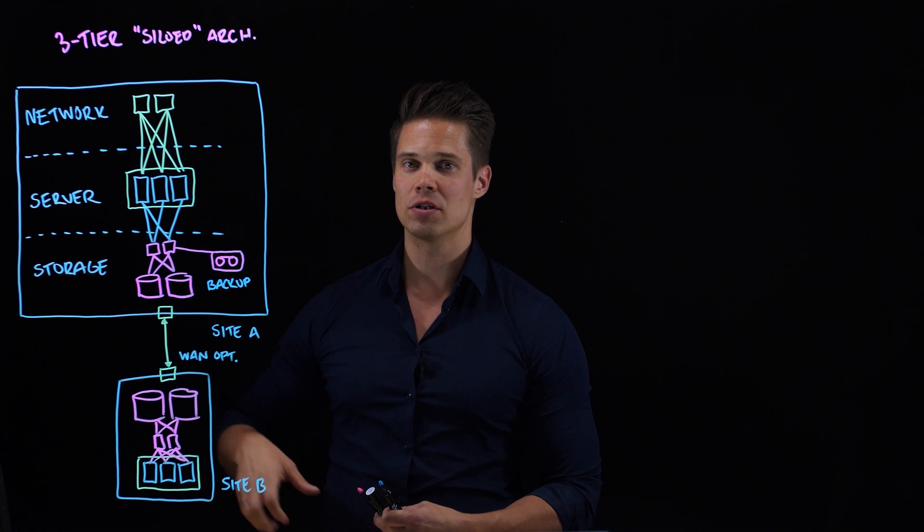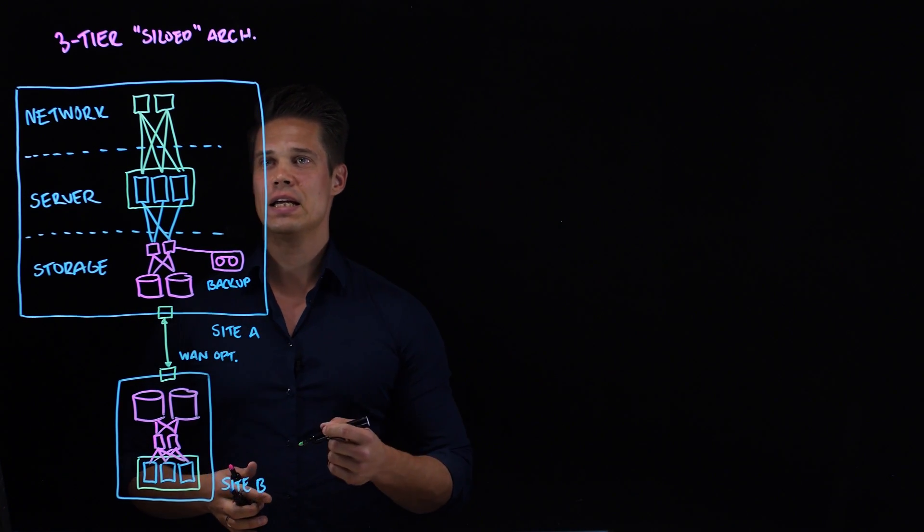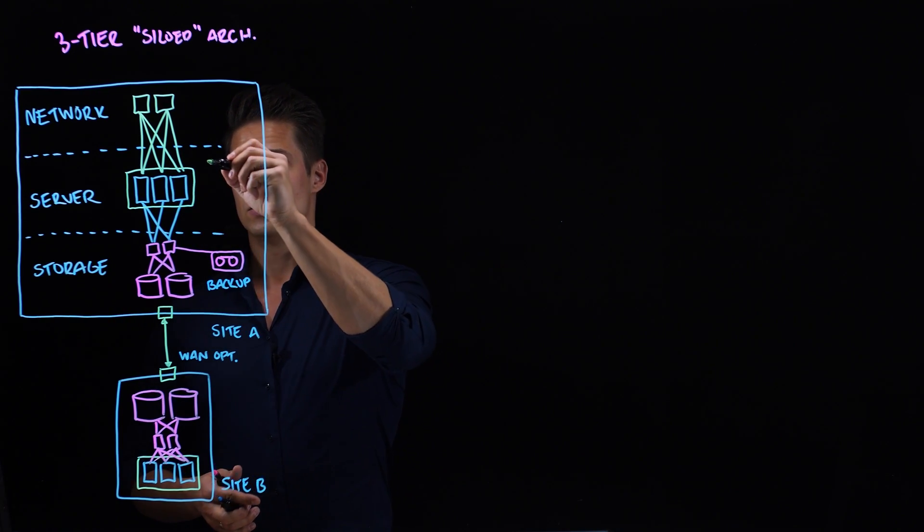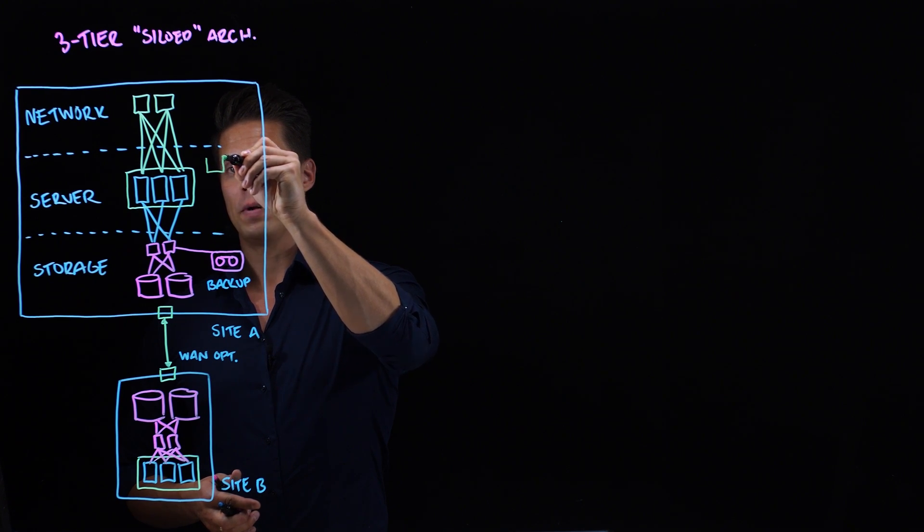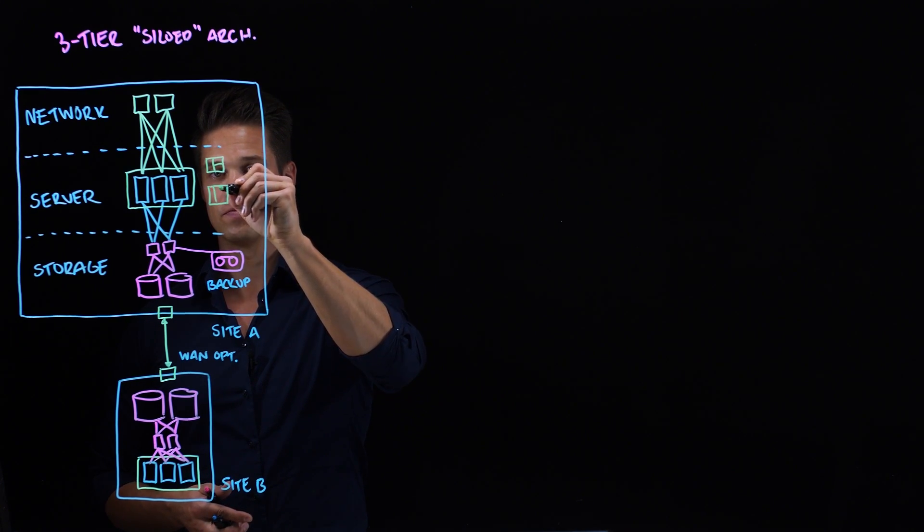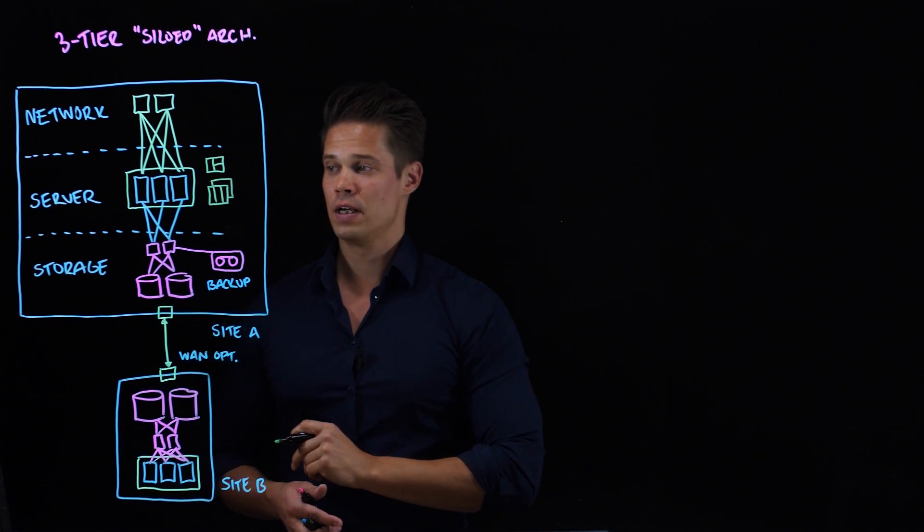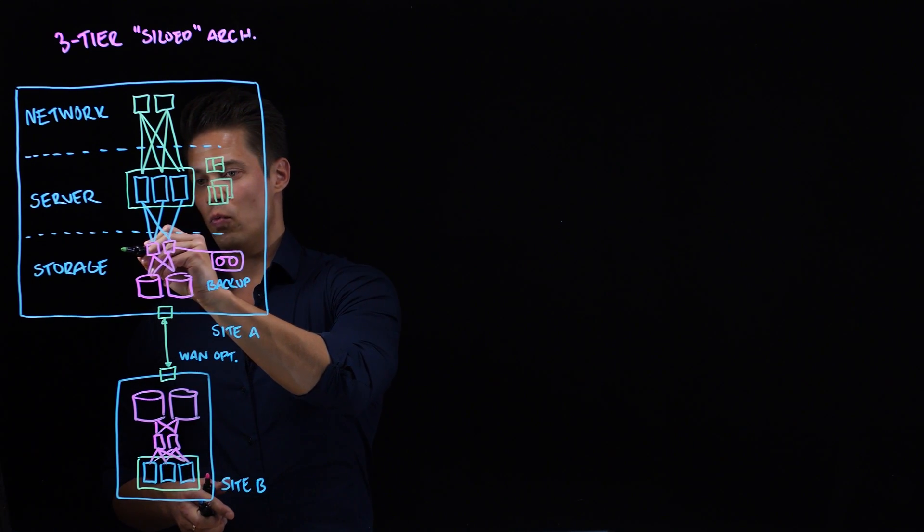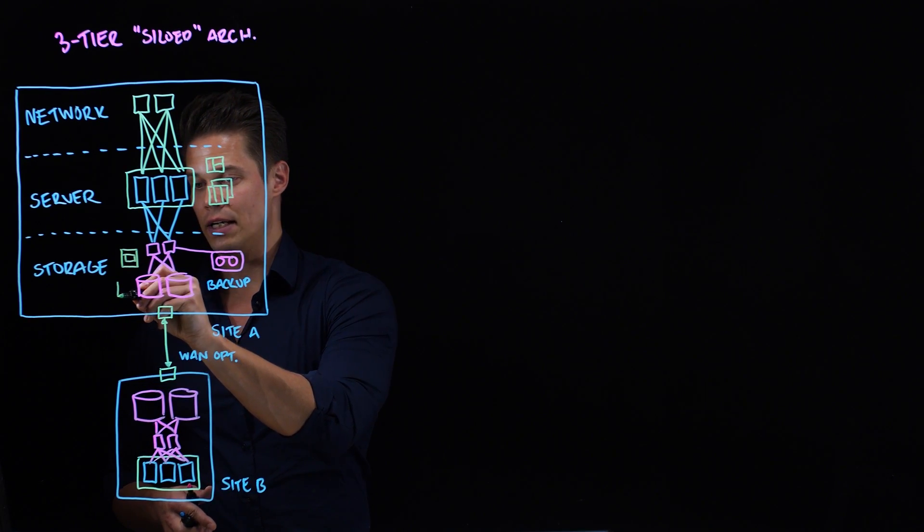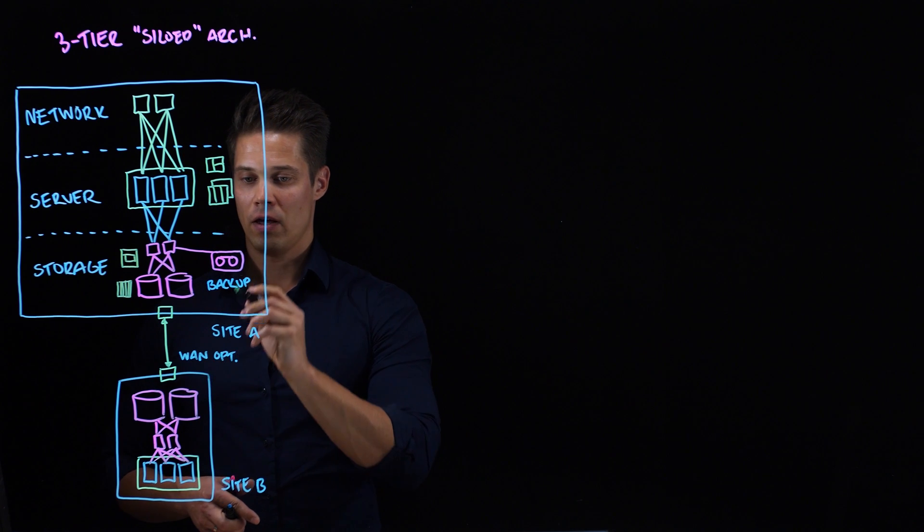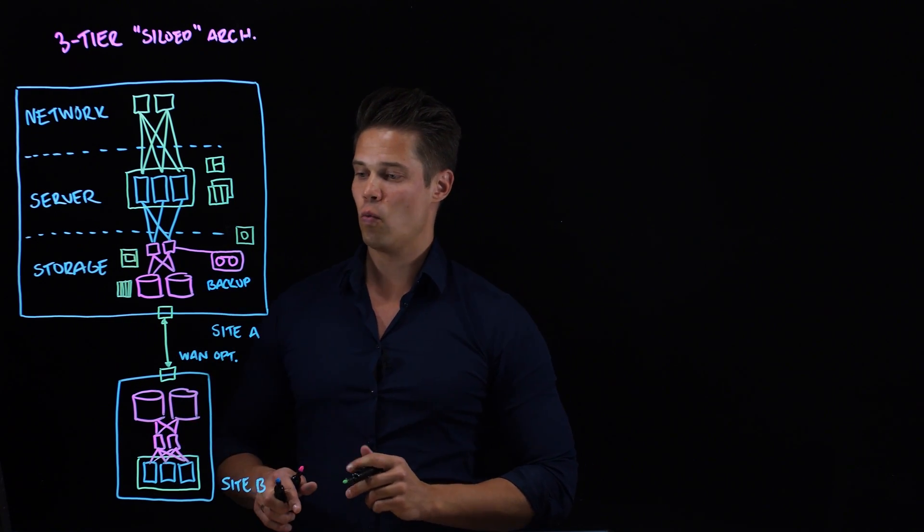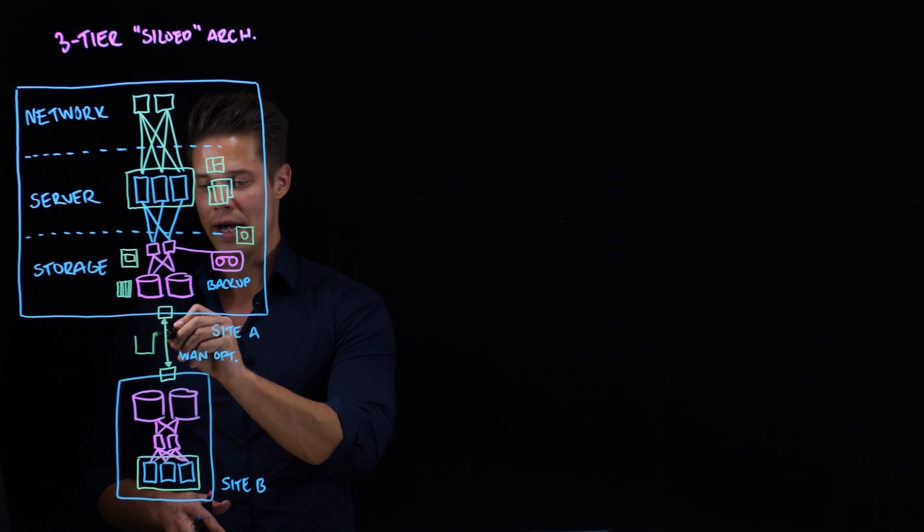It's not complex only from infrastructure hardware point of view. We have also many different kinds of user interfaces that we have to use to manage the whole environment. Hypervisor environment is probably managed with one type of user interface. We have another user interface for managing servers. Probably we have a few of them there. Storage area network is managed with different user interface. We have a fifth user interface to manage storage devices. Backups are managed with different user interface, most probably. And then we still need one user interface to manage the whole WAN optimization.